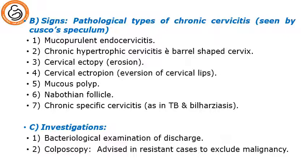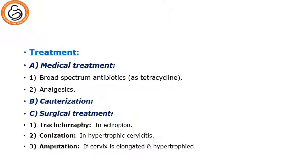The investigations include bacteriological examination of the discharge, and colposcopy in resistant cases to exclude malignancy. The treatment of chronic cervicitis is medical treatment including broad-spectrum antibiotic — especially tetracycline for treating chlamydia infection — and analgesia. We can do cauterization if medical treatment fails. Rarely we need surgical treatment like trachelorrhaphy in case of ectropion, or amputation in hypertrophied elongated cervix.